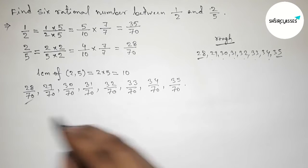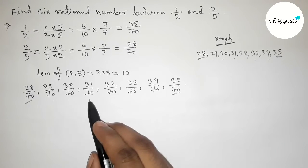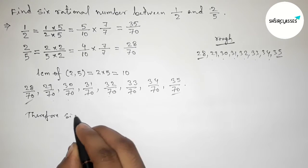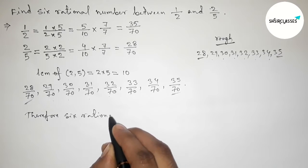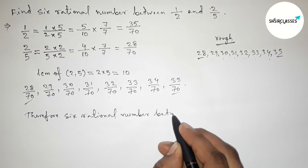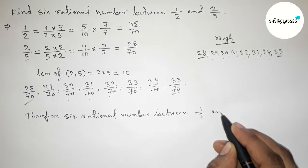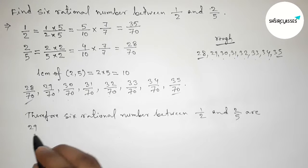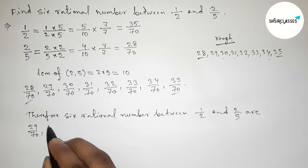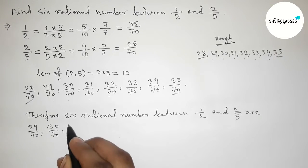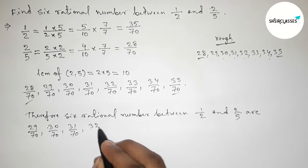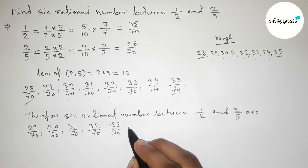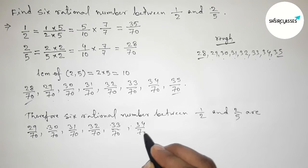Now between 28/70 to 35/70 these are 6 rational numbers. Therefore the required 6 rational numbers between 1/2 and 2/5 are: 29/70, then 30/70, then 31/70, then 32/70, 33/70, and last one is 34/70.